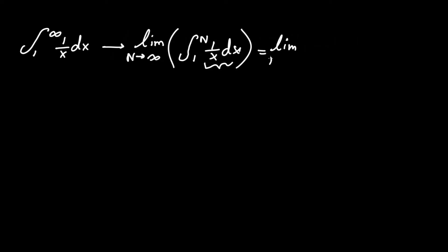So this equals the limit again of n approaching infinity. The integral of 1 over x dx is just ln absolute value of x, and it will be between 1 and n.